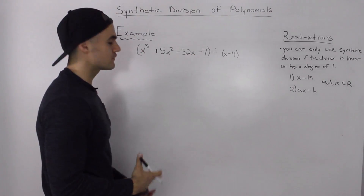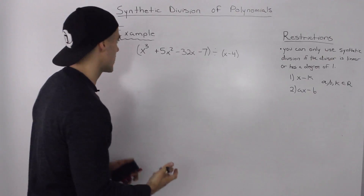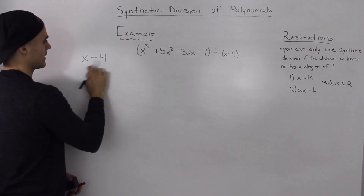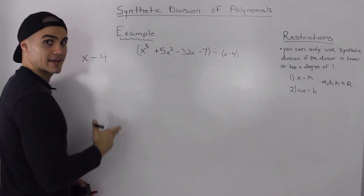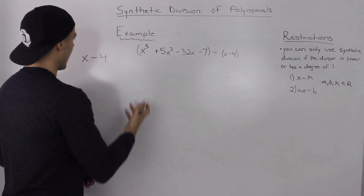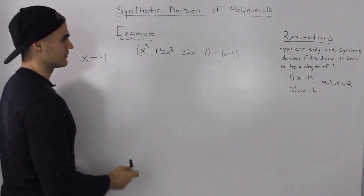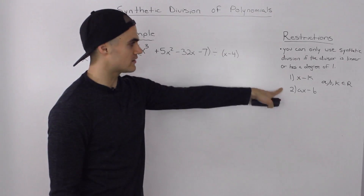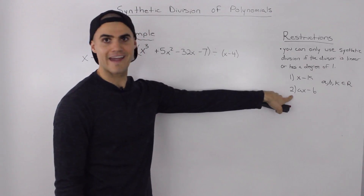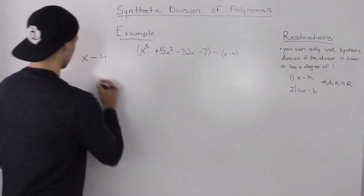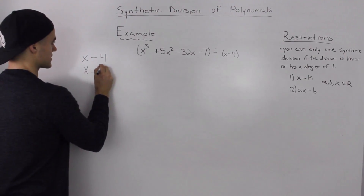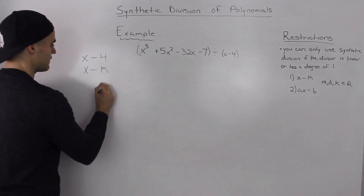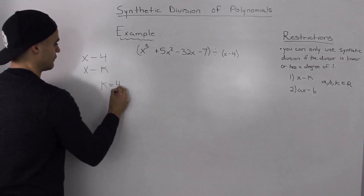Now with synthetic division, the first thing you always want to check is: is the divisor — in this case X minus 4 — linear? And it is linear; it has a degree of one. The next thing to check is, does it hold one of these forms — is it X minus K or AX minus B? Well, it holds the form X minus K.